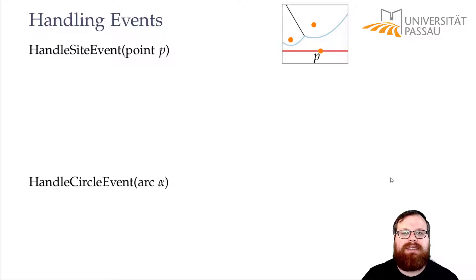Let's start with the site event. The site event is defined by the sweep line finding a new site. So it reaches the y-coordinate of the next site. We discussed earlier, what do we have to do here now?